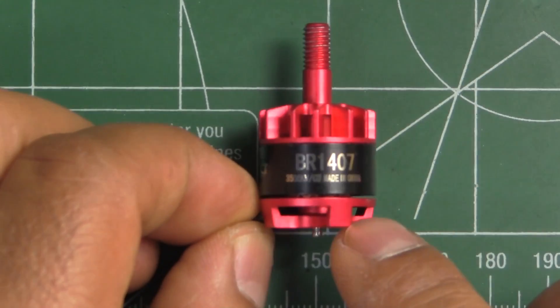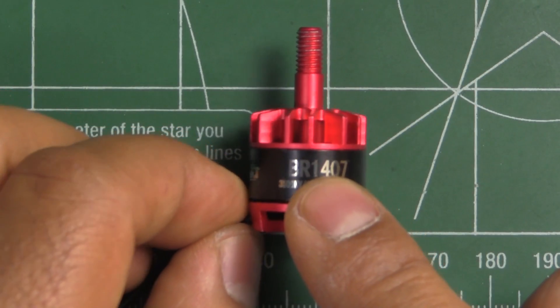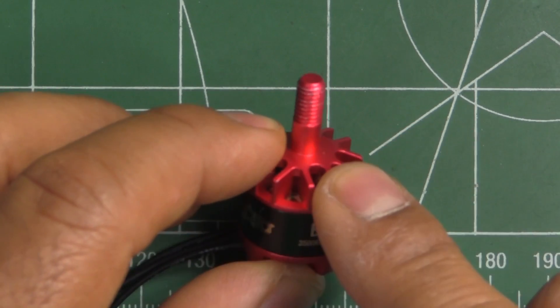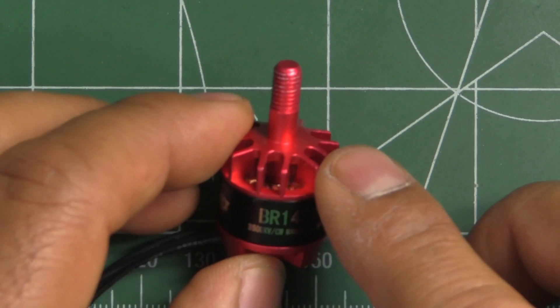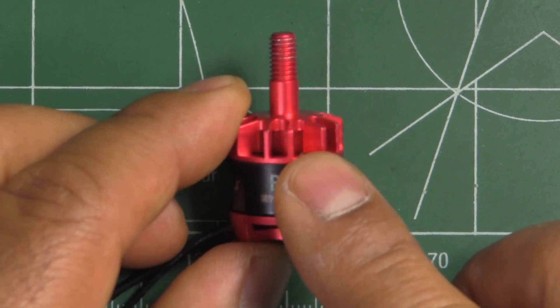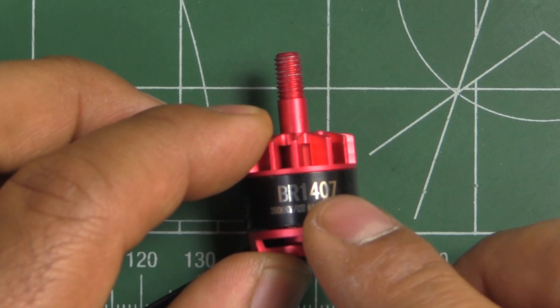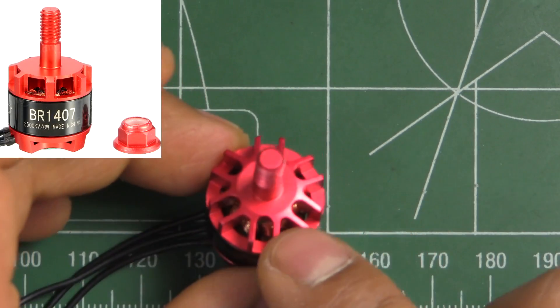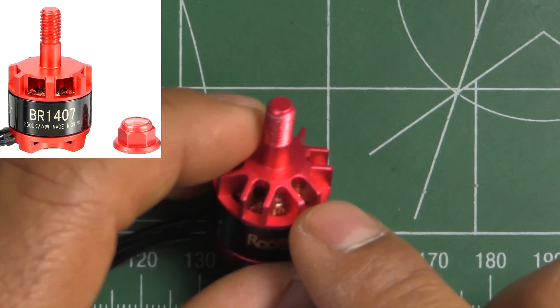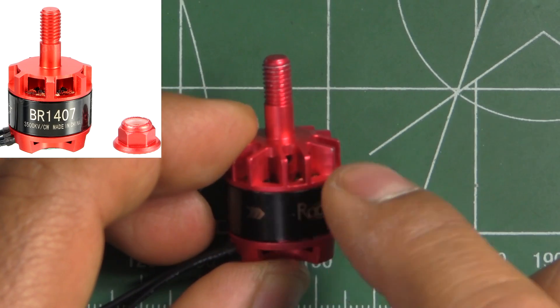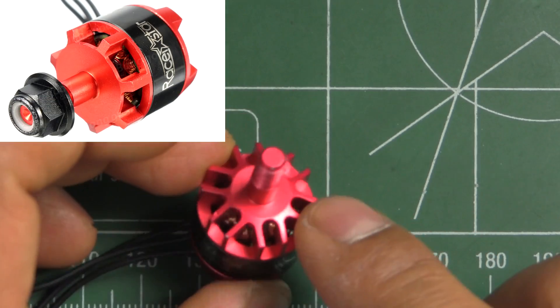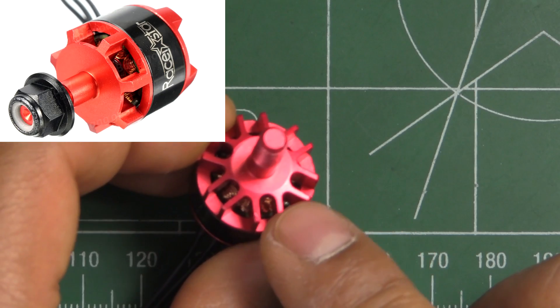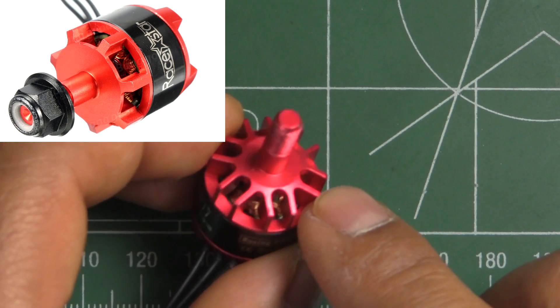But then this one was taken down from Banggood because there was some controversy regarding the way it looked. Razor Star went ahead and redesigned the bell, the top portion. They re-released it with a different looking top part right here so it doesn't have these fins, the new version that's out for sale right now.